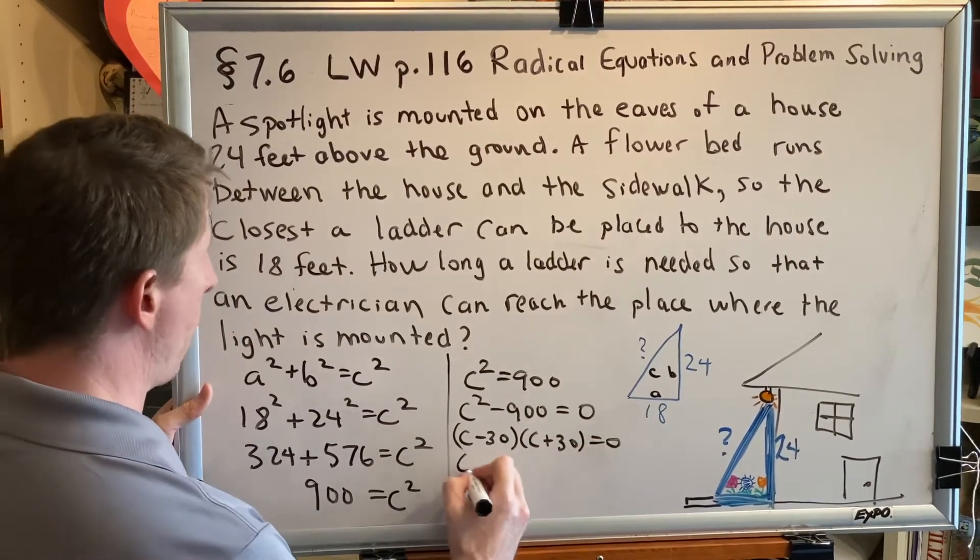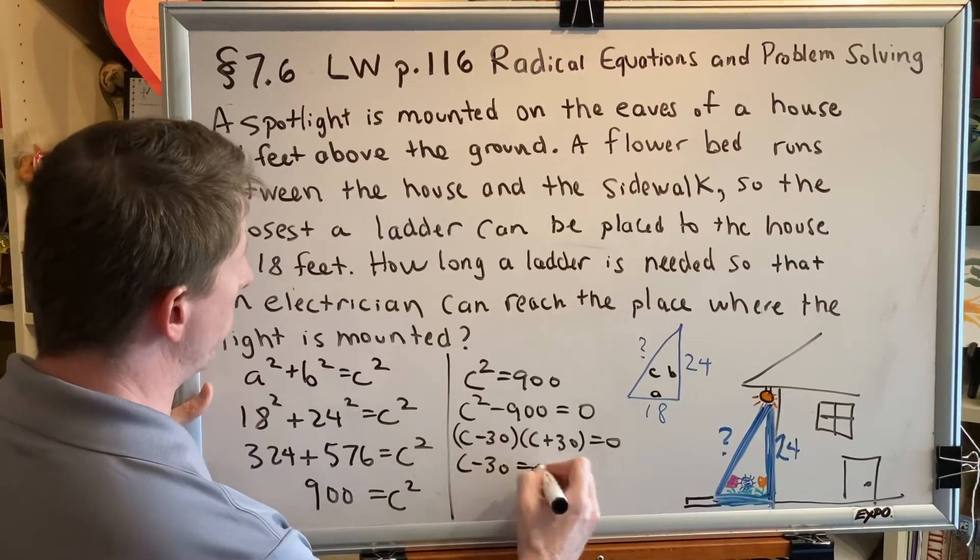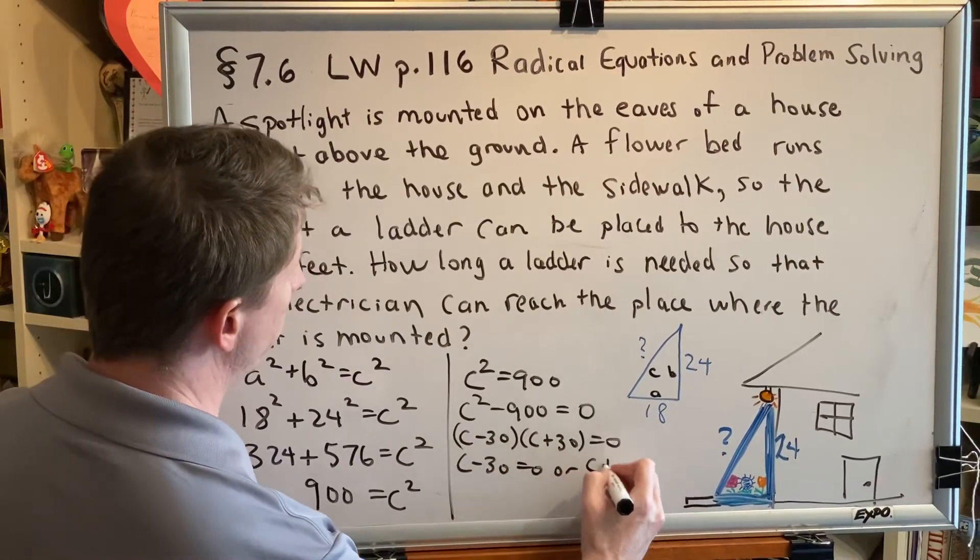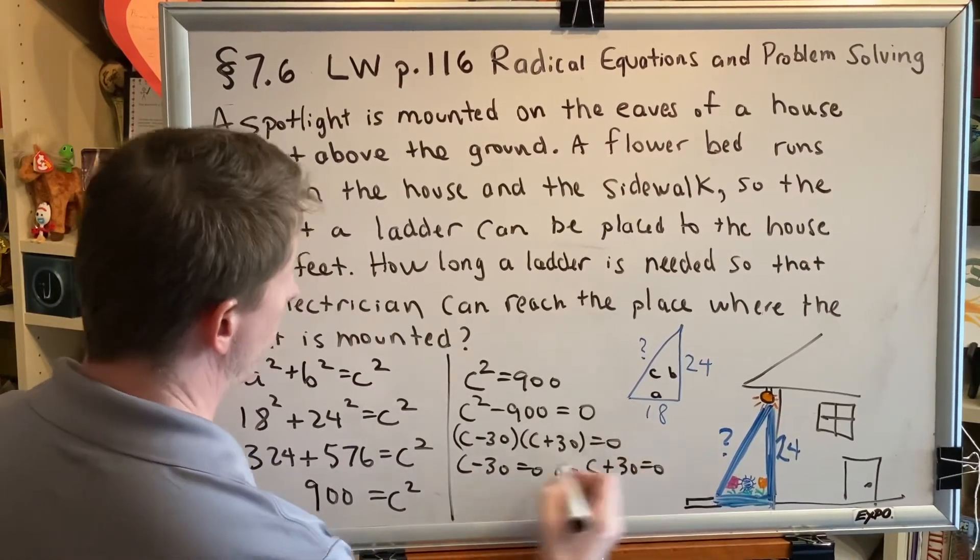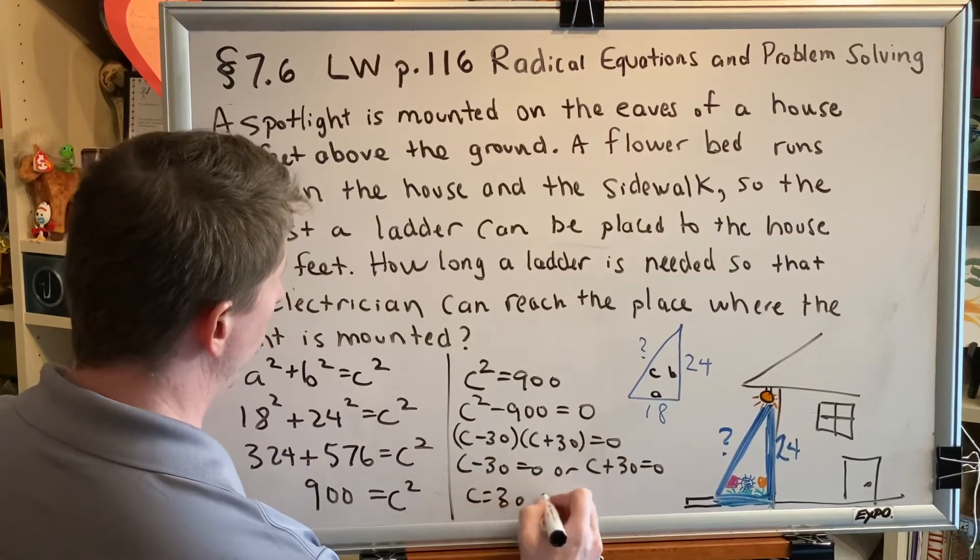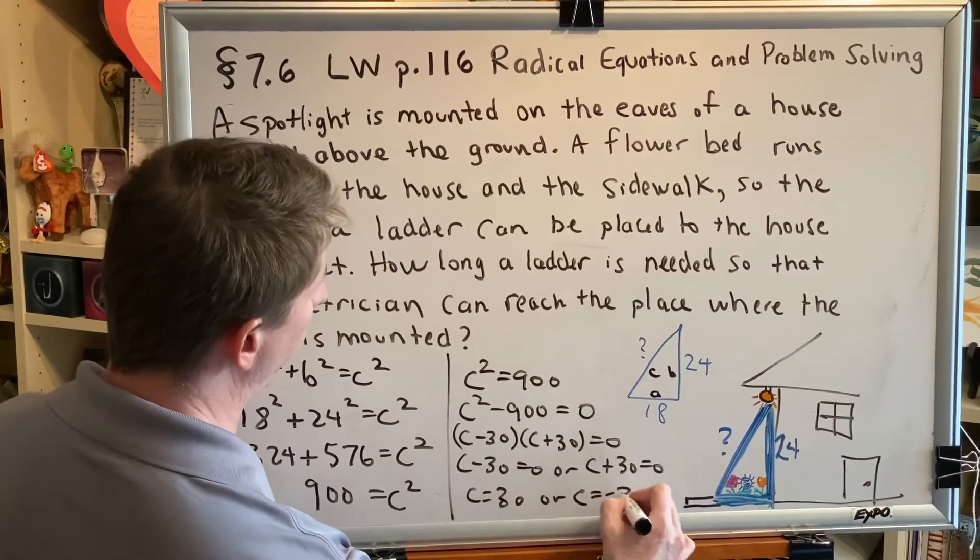By the zero product property, c - 30 = 0 or c + 30 = 0. So we get c = 30 or c = -30.